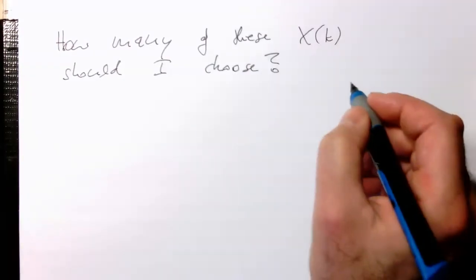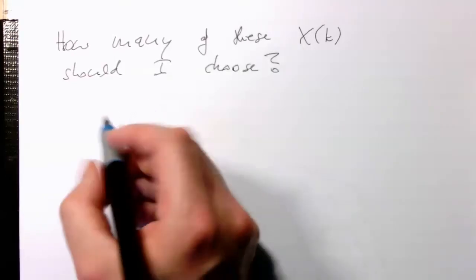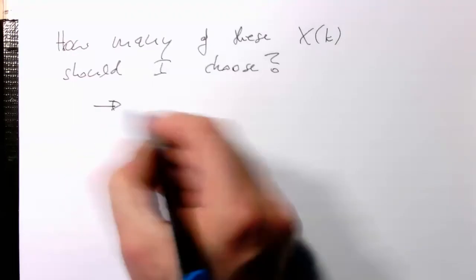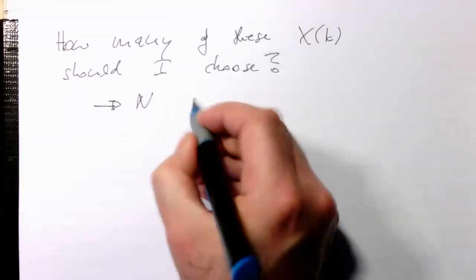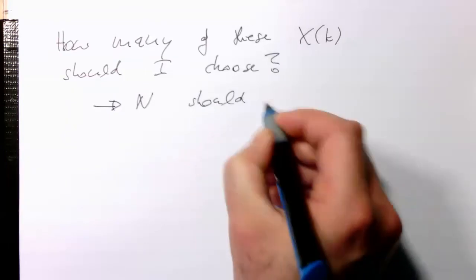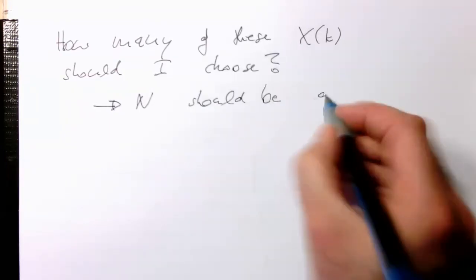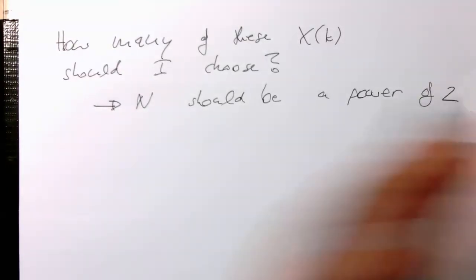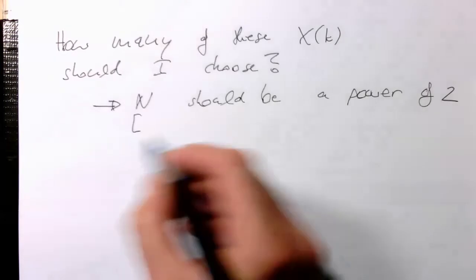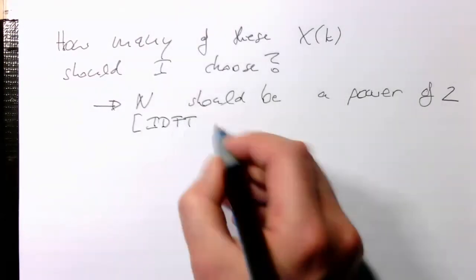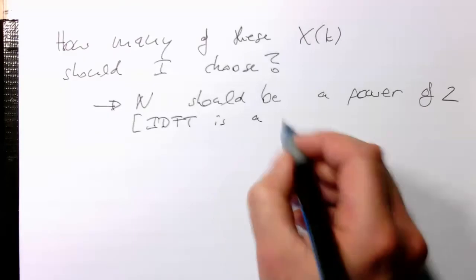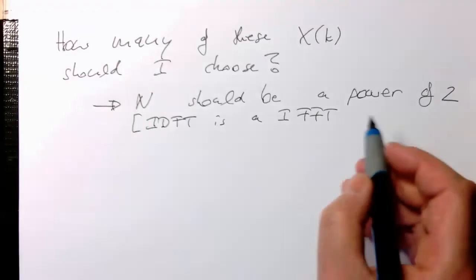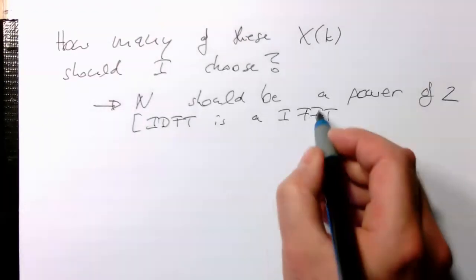So there are two criteria. Because first of all, N should be a power of 2. A power of 2, and that's because usually the IDFT is an inverse fast Fourier transform. And this works best with length of N being a power of 2.